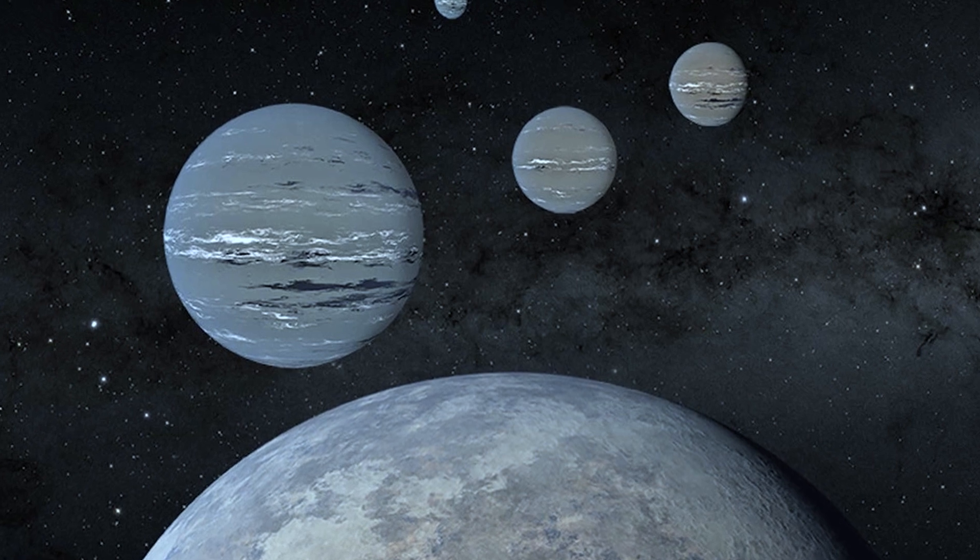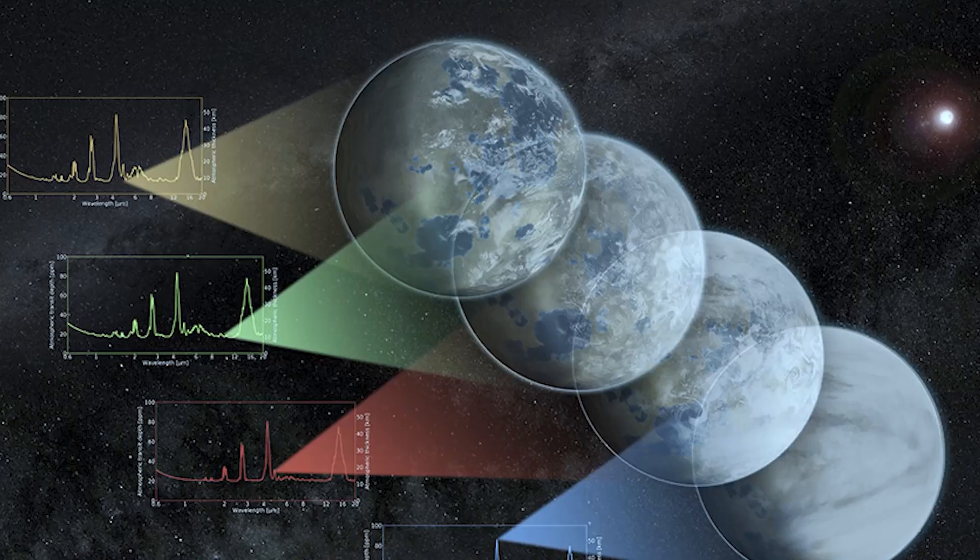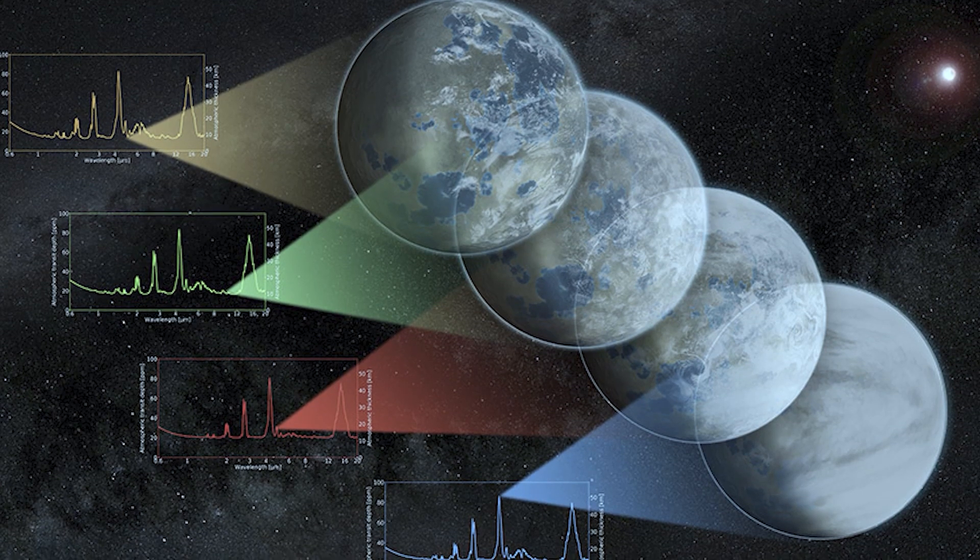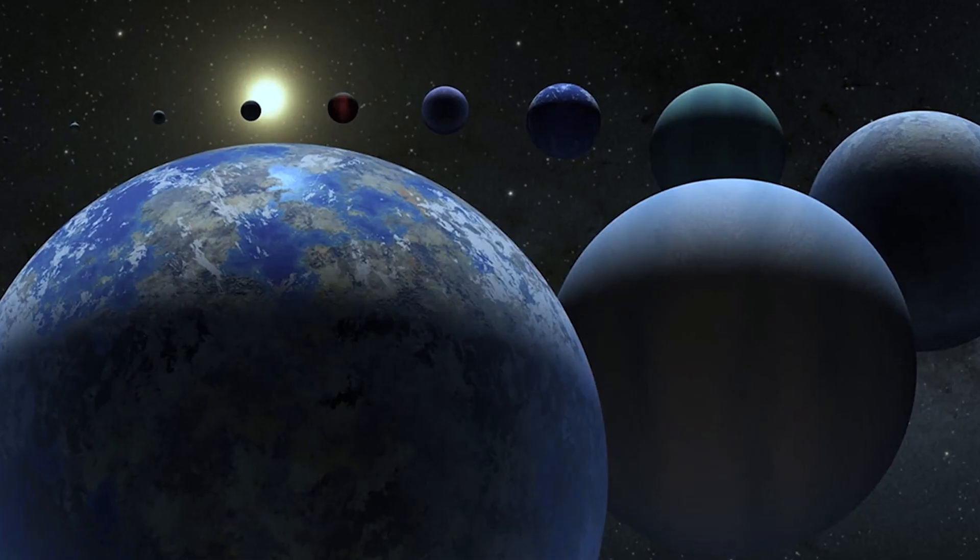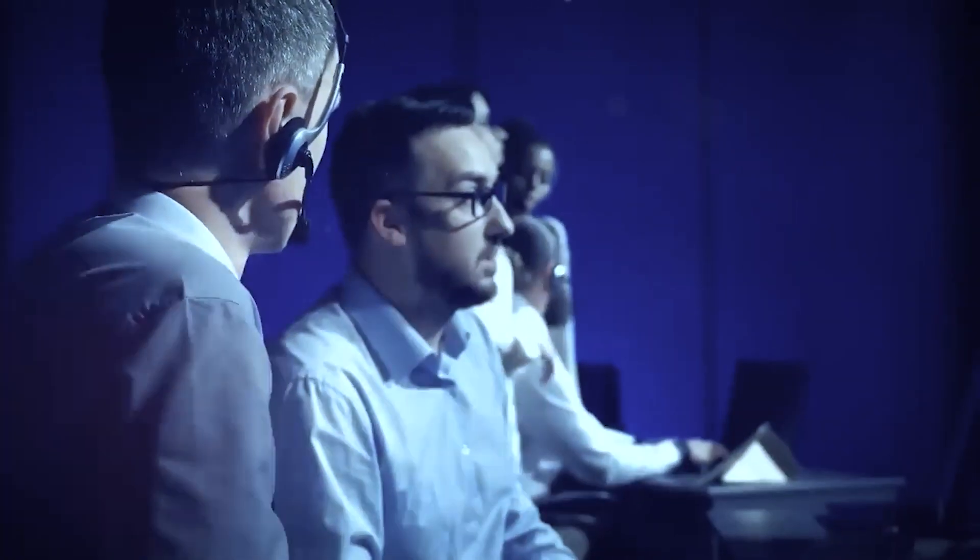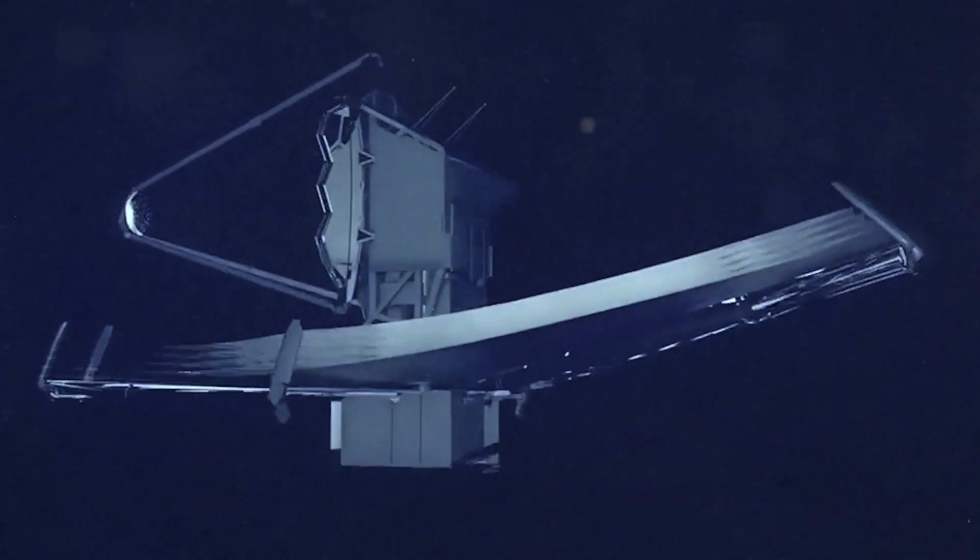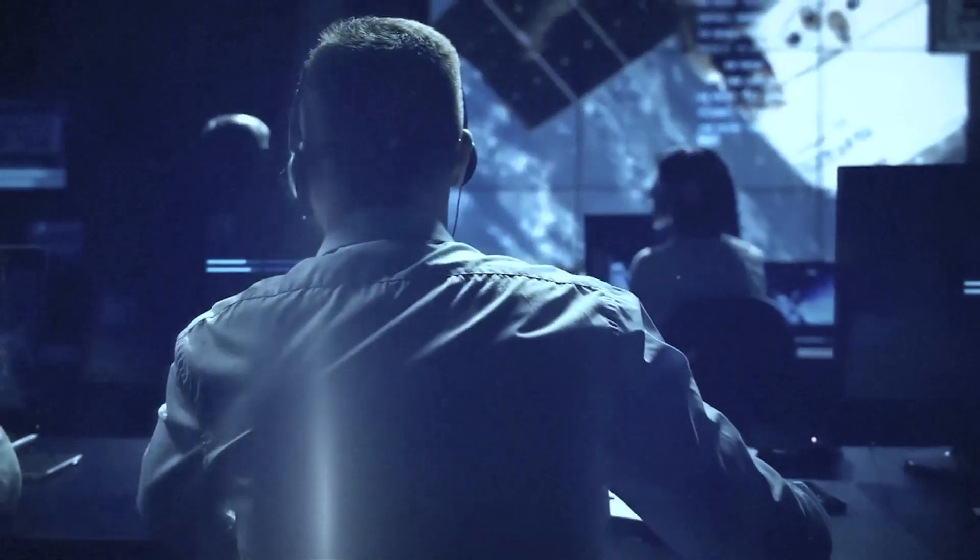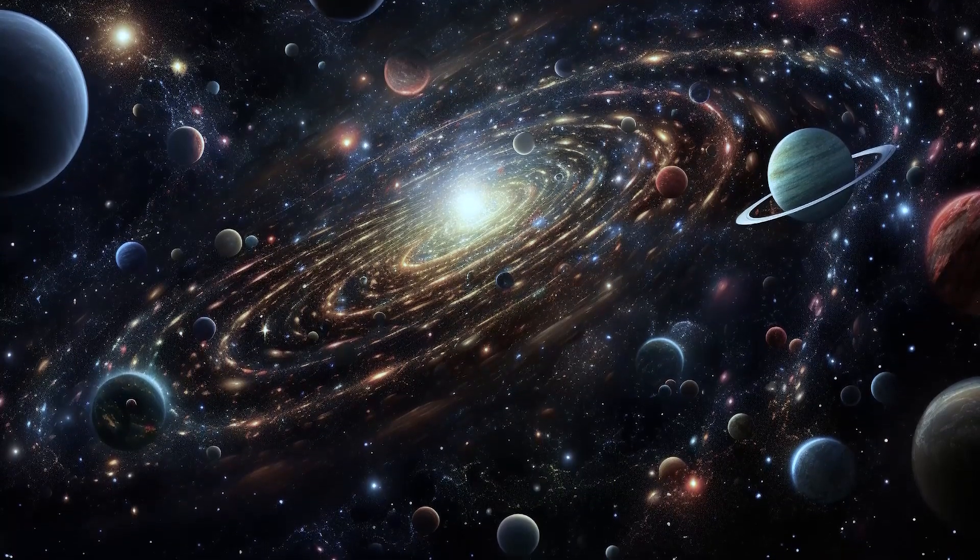But there are other candidates out there, planets like those in the TRAPPIST-1 system, which also show potential for habitability. The more we learn about these distant worlds, the more we realize just how diverse planetary systems can be. Each new discovery adds to our understanding of how planets form and evolve, and how life might develop under different conditions.